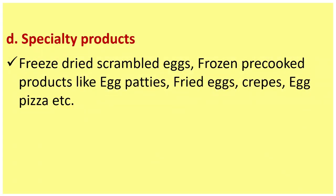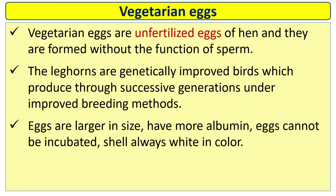Specialty products include freeze-dried scrambled eggs and frozen free products like egg patties, fried eggs, crepes, egg pizza, etc. Vegetarian eggs — also called vegan eggs — are unfertilized eggs of hen formed without the function of sperm. Leghorns are genetically improved birds which produce eggs through successive generations under improved breeding methods. These eggs are larger in size, have more albumin, and cannot be incubated. Shell is always white in color.